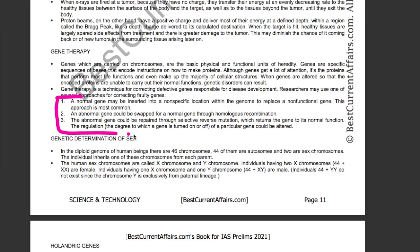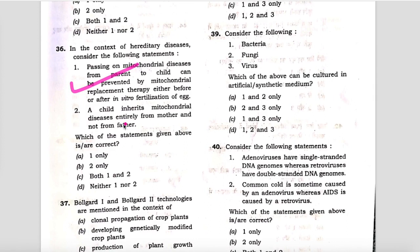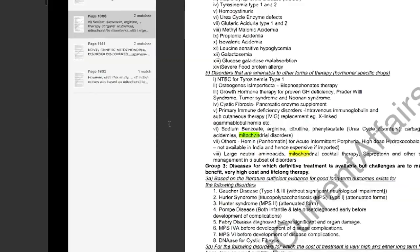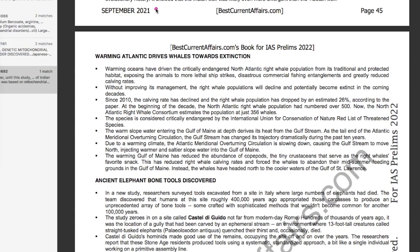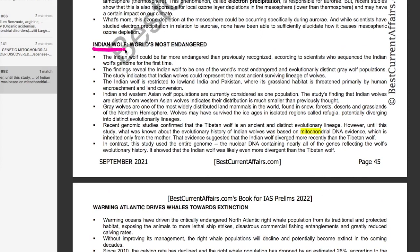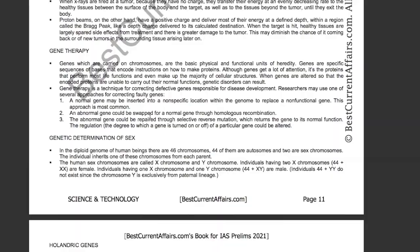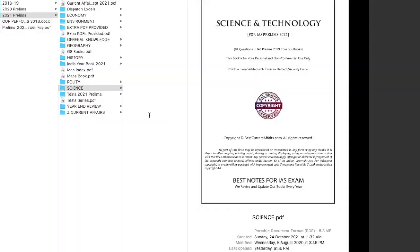The second statement is that a child inherits mitochondrial diseases entirely from the mother and not from the father. This statement is also correct. See the September 2021 current affairs book, page number 45 — there was news on the Indian wolf, the world's most endangered. It is mentioned that the known history of the Indian wolf was based on mitochondrial DNA evidence, which is inherited only from the mother. Therefore, statement two is also correct — both one and two are correct, C is the answer.